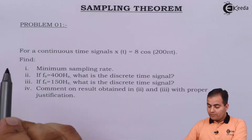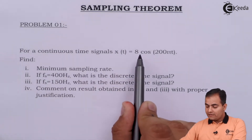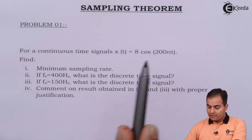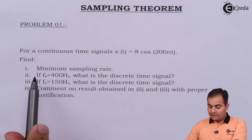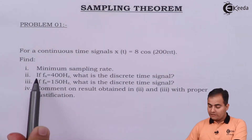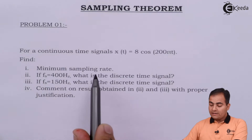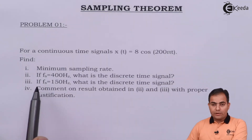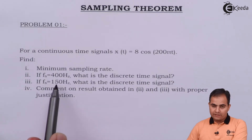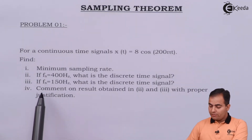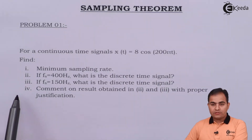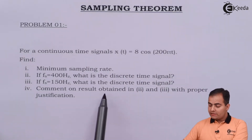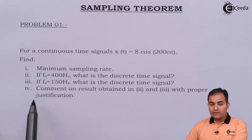Problem number one: for a continuous time signal x(t), the signal is given as 8cos(200πt). We have to find: first, the minimum sampling rate; second, if the sampling frequency fs equals 400 Hz, what is the discrete time signal; third, the same but with sampling frequency 150 Hz; and finally, comment on the results obtained in part 2 and part 3 with proper justifications.